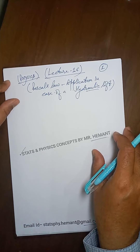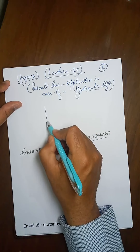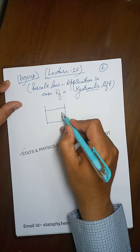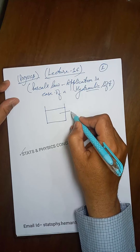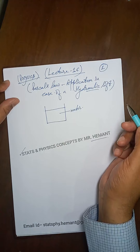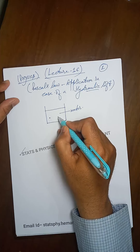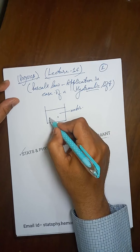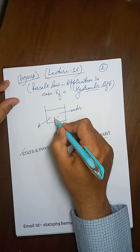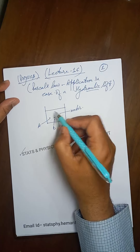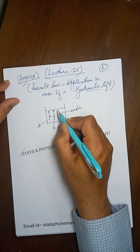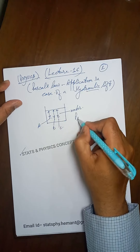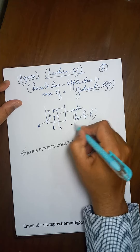Now let us start. What is Pascal's law? Pascal's law states that if I take some fluid in a container — in this case I'm taking a liquid, let's say water — in case of a stationary liquid, the pressure at all points at the same depth inside the liquid will remain the same. So P_A will be equal to P_B and that will be equal to P_C.